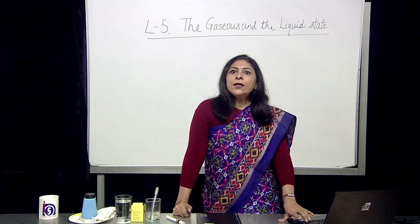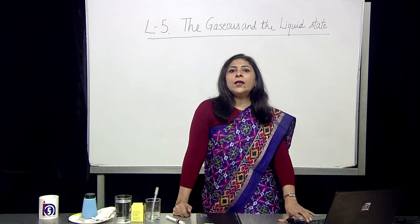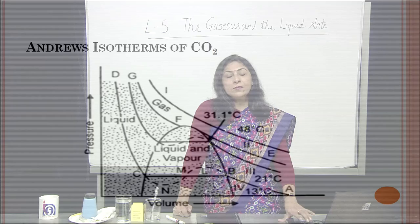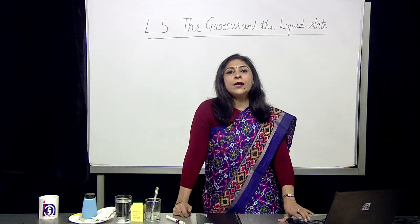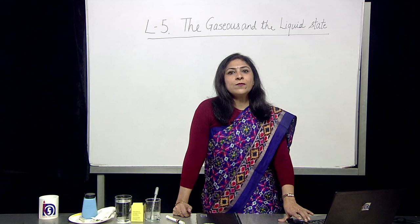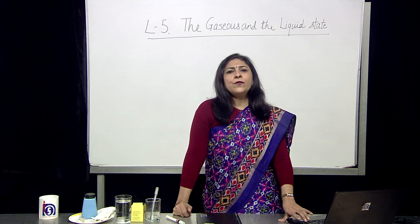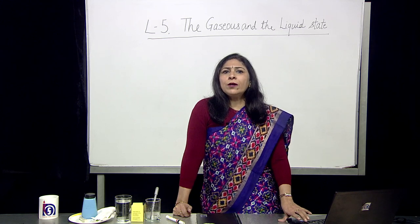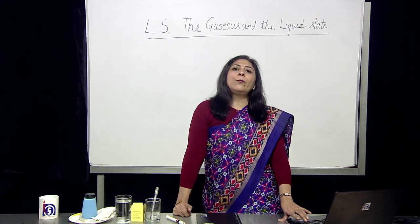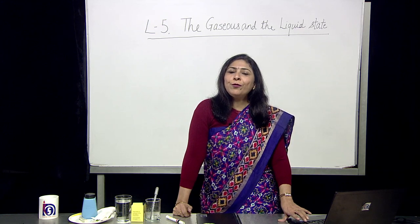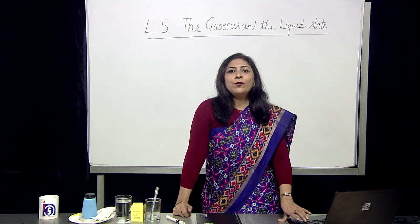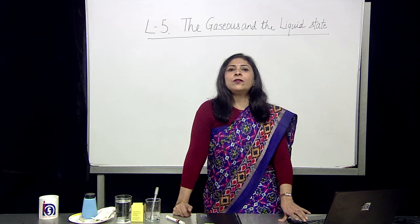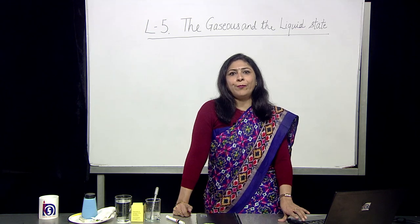At point C, the gas is completely in the liquid phase. From C to D, it behaves as a liquid, and the slope is very steep since the liquid is almost incompressible. We cannot compress the liquid because, as the molecules go from gas to liquid, they get closer to each other, making it very difficult to compress them further.